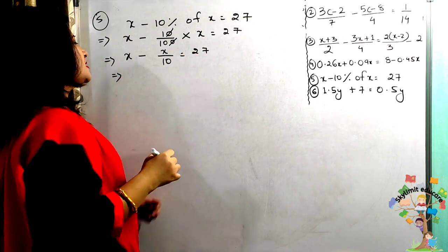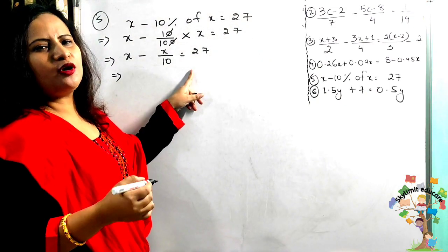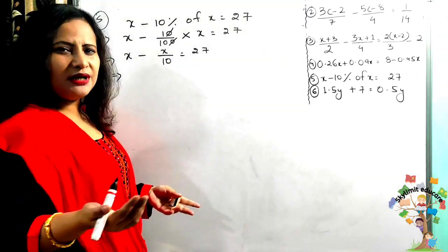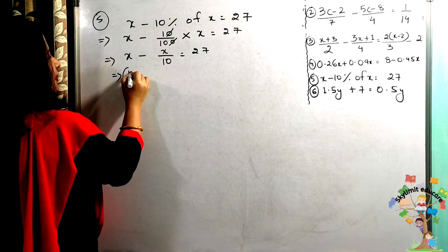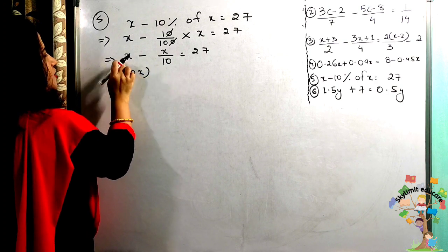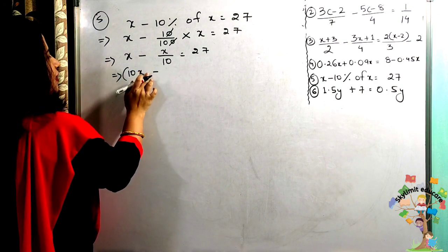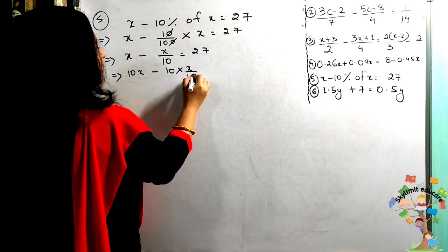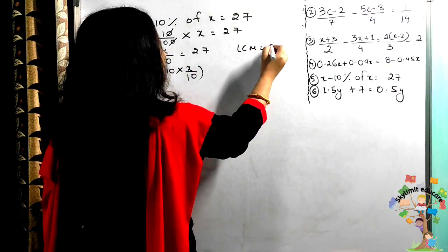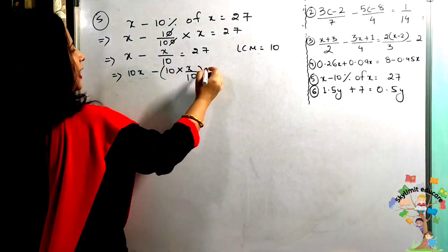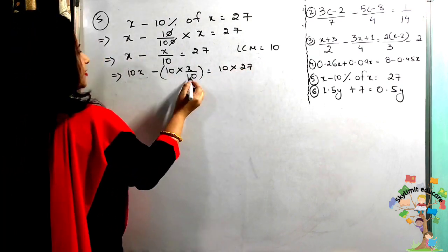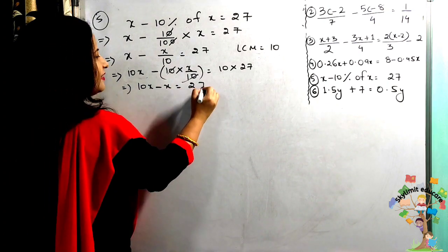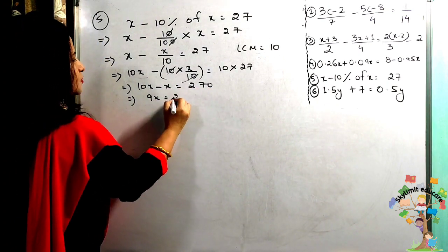The LCM of the denominators (10 and 1) is 10. Multiplying through by 10: 10x − x = 270. So 9x = 270.